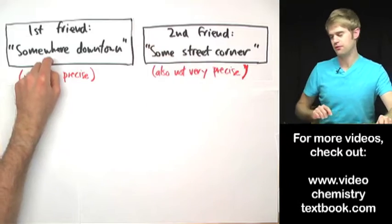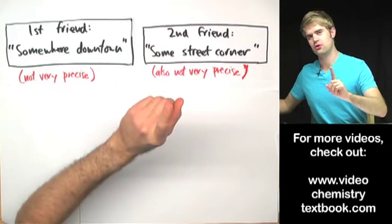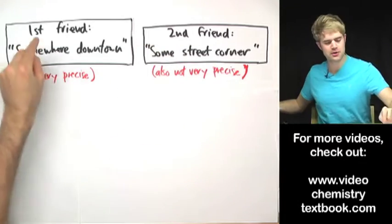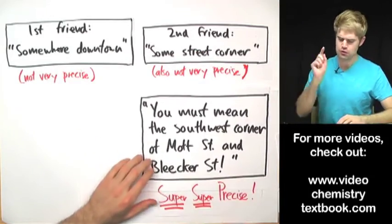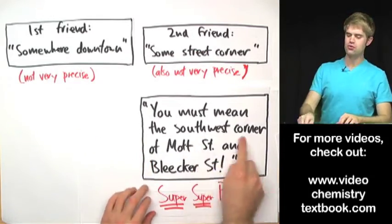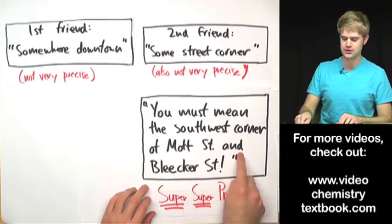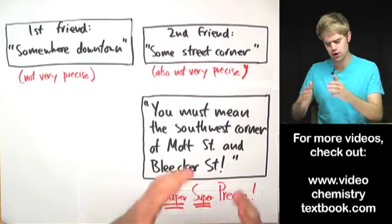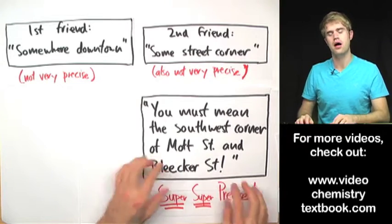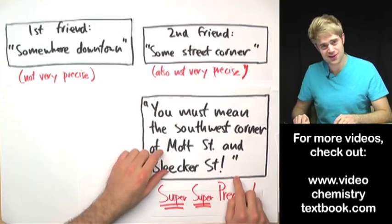Now, based on these two pieces of information, would it be possible for you to come up with this answer? Would it be possible for you to hear these two pieces of information and think, aha, you must mean the southwest corner of Mott Street and Bleecker Street? This is an incredibly precise answer. You know exactly where they are. No, you couldn't do this, right?